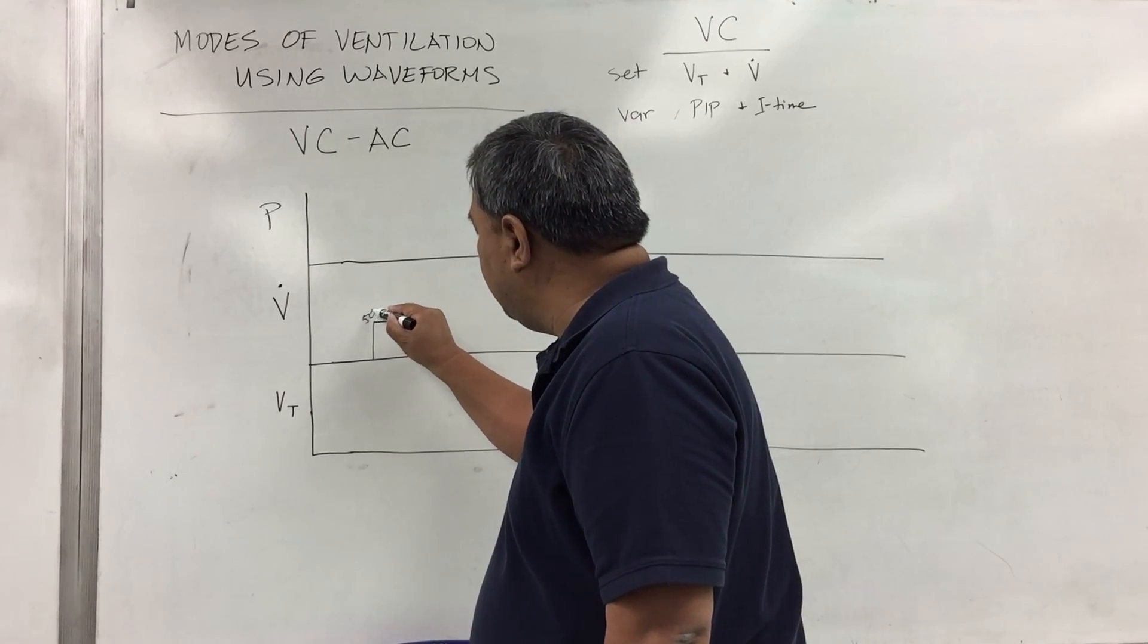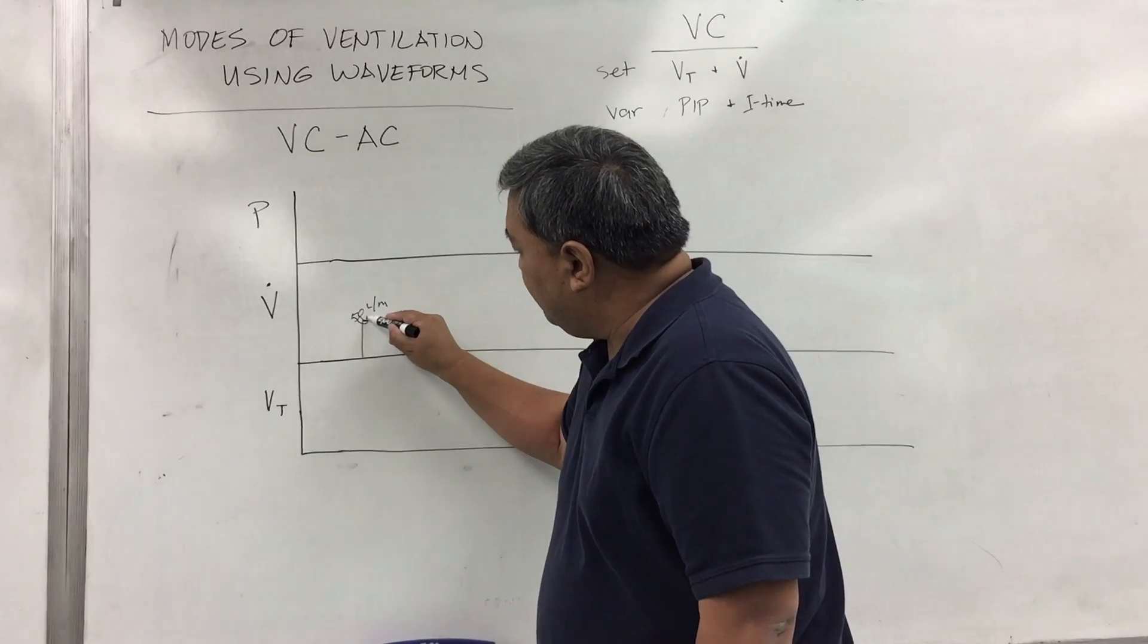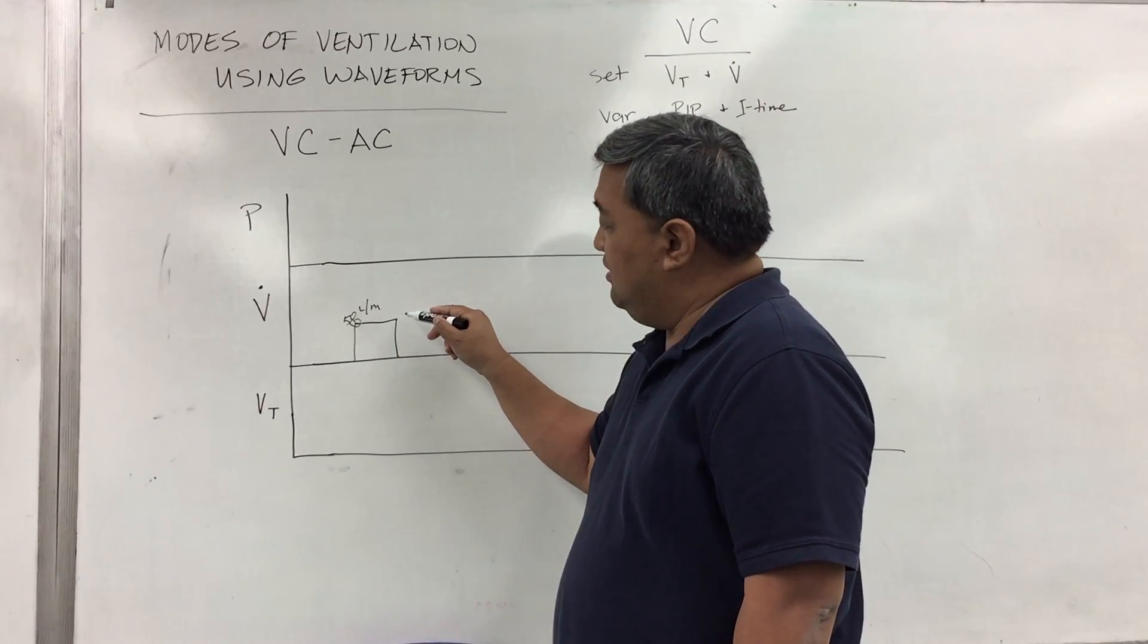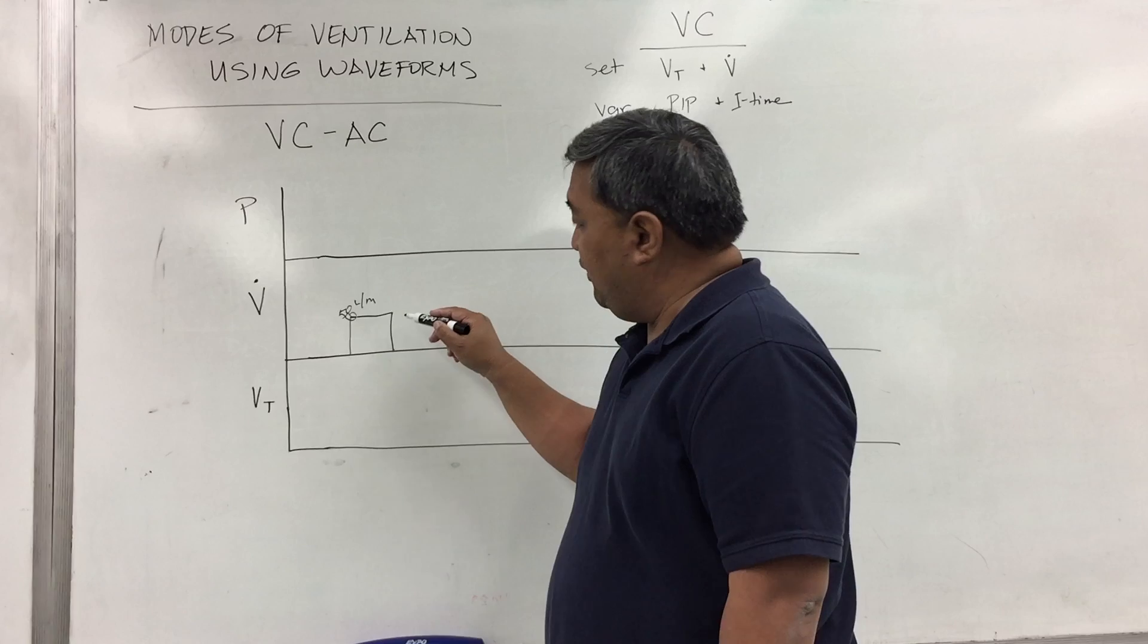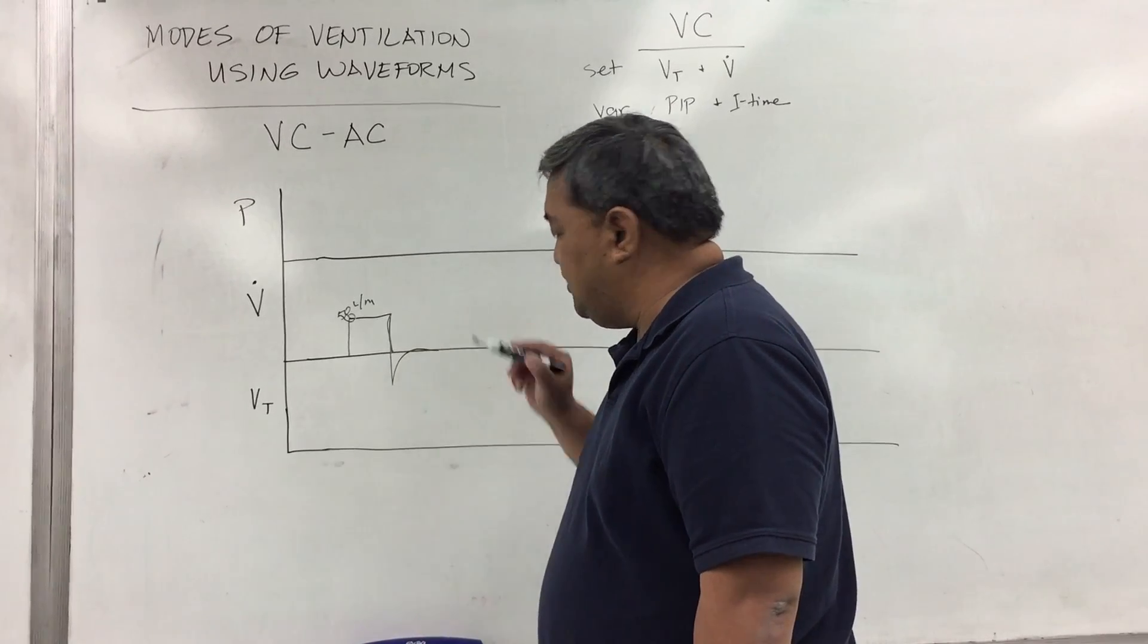So let's say this is 50 liters per minute. That 50 is hit right here. You've achieved that 50 and it's maintaining it. This area here is your inspiration and then from here downward is your exhalation.